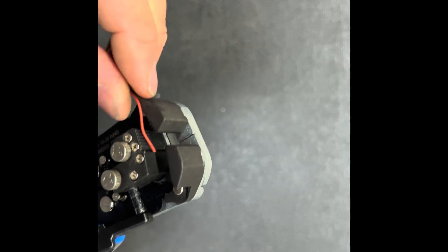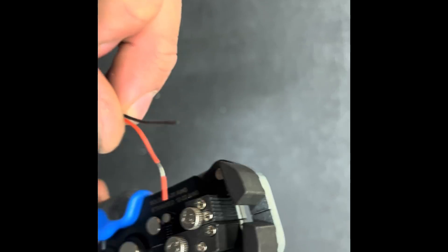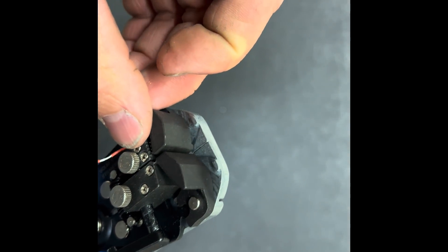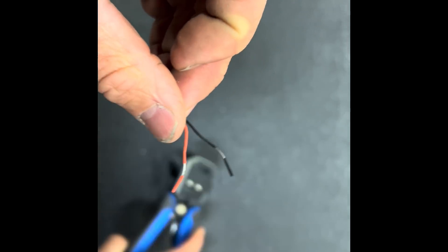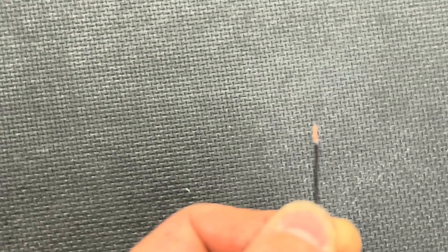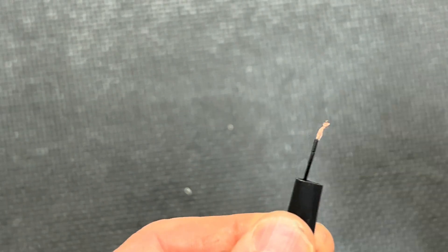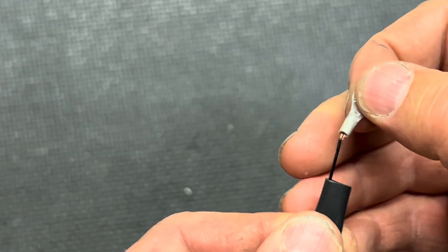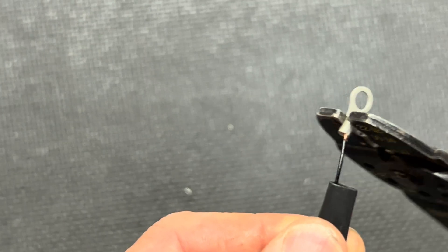And we're going to once again strip these wires down using our wire strippers. On the black wire we're going to put a piece of heat shrink, follow it up with a terminal ring, and we're going to go ahead and crimp that ring down.